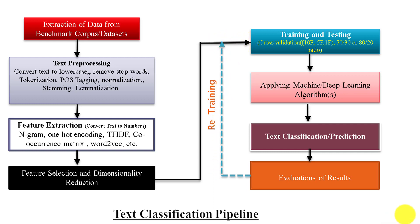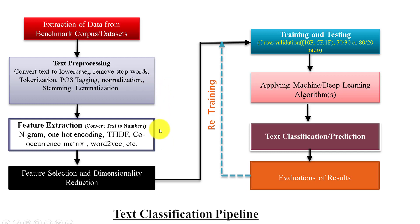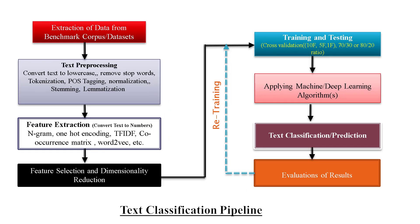This video shows the pipeline of the text classification process and would be very helpful for those who are trying to implement machine learning and deep learning for natural language processing tasks. Text preprocessing, feature extraction, and selection of the machine learning or deep learning algorithms are three very important steps of this pipeline. Several techniques are available for text preprocessing and feature extraction. This pipeline can be useful to solve various types of NLP problems with some modification. In my next videos, I will discuss those techniques.